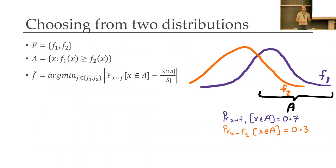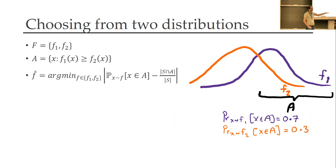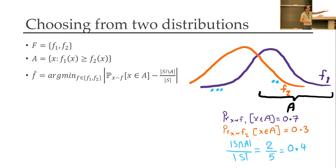Let's start with the simplest case: learning from only two distributions. Non-privately, you can use the Scheffé test. Given densities f1 and f2, you look at the set A — all points where f1 is greater than or equal to f2. Without seeing any data, you can note, say, that f1 assigns probability 0.7 to set A and f2 assigns 0.3. Then you get your sample; say 5 instances, 40% of which are in set A. That empirical estimate of 0.4 is closer to 0.3 than 0.7, so you choose f2.